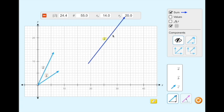The Values option displays the length of each on-screen vector. The Angles option displays the angle relative to the x-y graph of each on-screen vector.